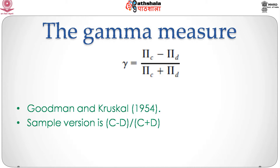The first and simplest measure is the gamma measure, defined for the population as gamma = (π_c − π_d) / (π_c + π_d) — the probability of concordance minus the probability of discordance divided by their sum. This measure is due to Goodman and Kruskal in 1954. Its sample estimate is given by (C − D) / (C + D), where C denotes the observed number of concordances and D the observed number of discordances.